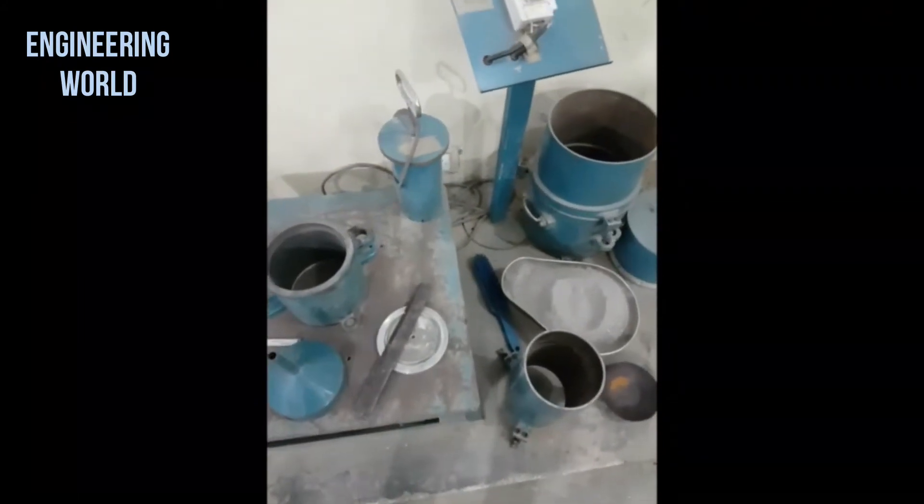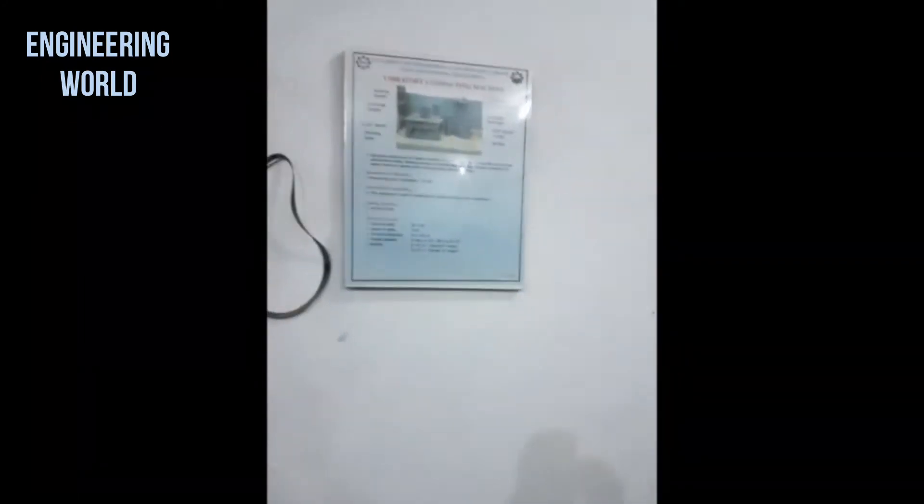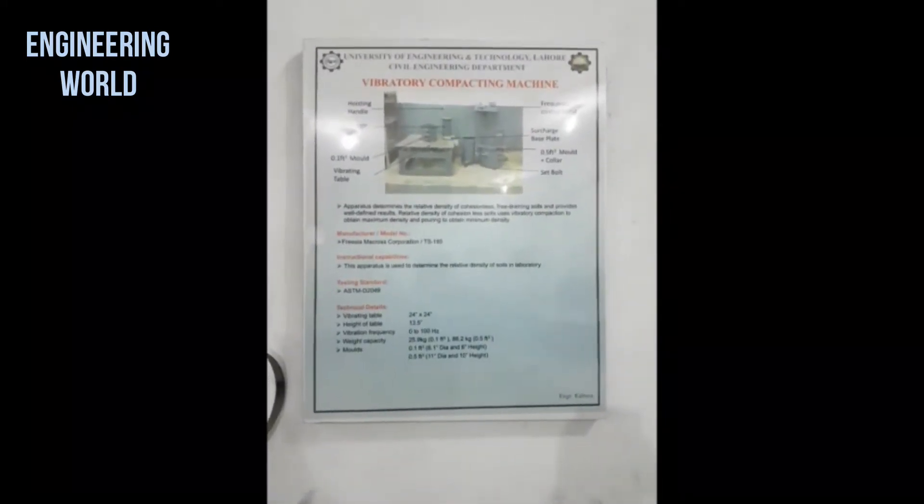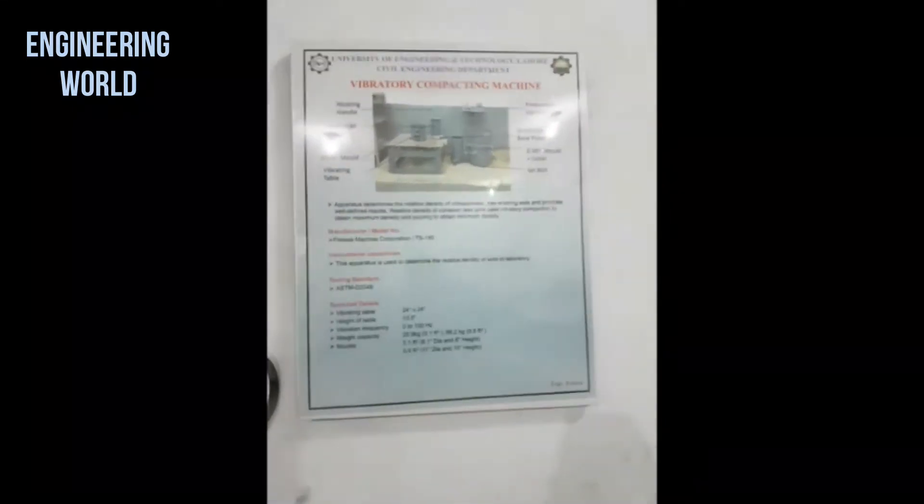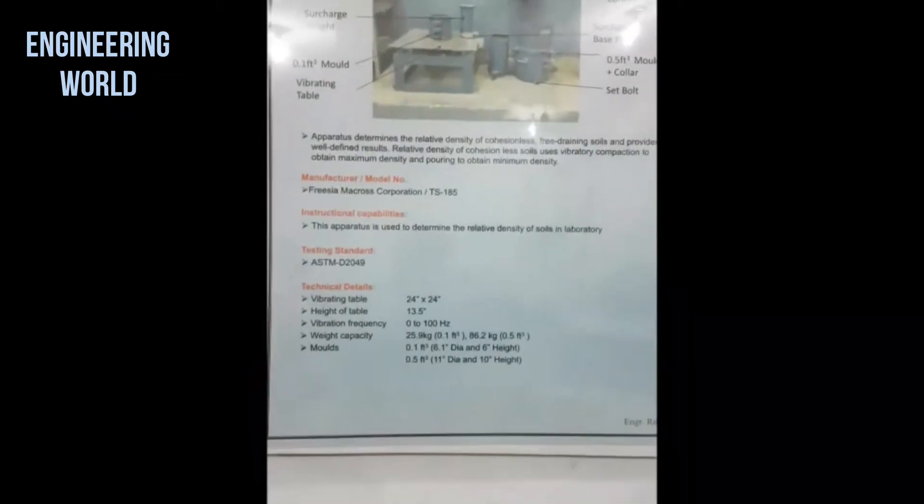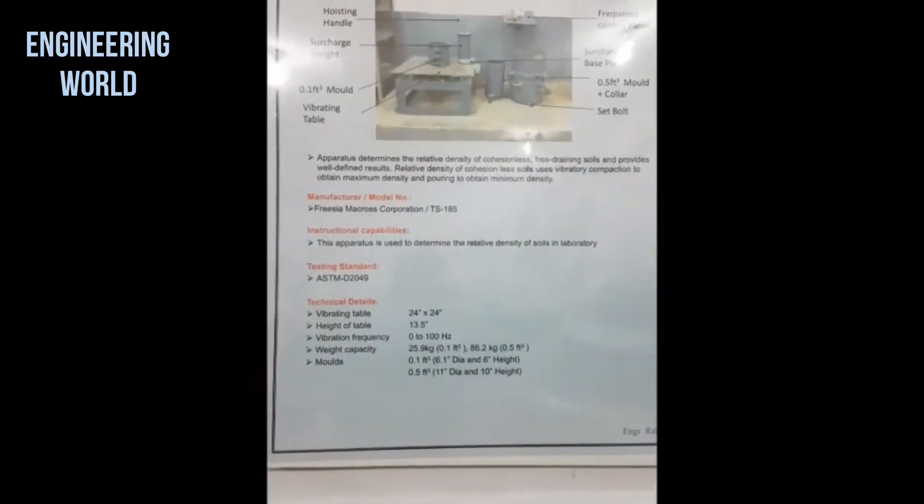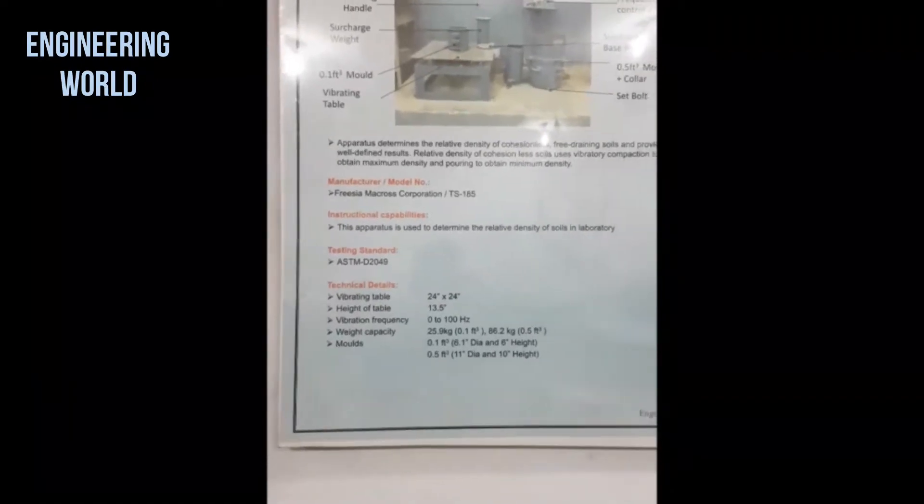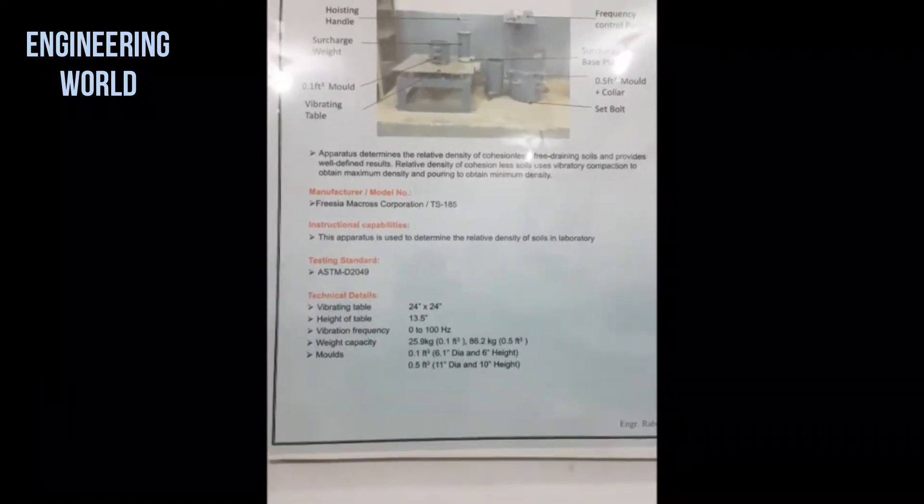In front of me is the apparatus that we will use in this experiment. This board on the wall above it shows the label description of some of the components of the apparatus along with some technical details such as the area of the vibrating table, the range of frequency we can use, the weights that we have, and the dimensions of the molds that are here.